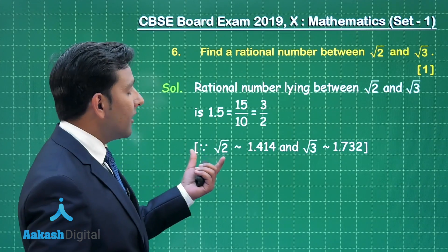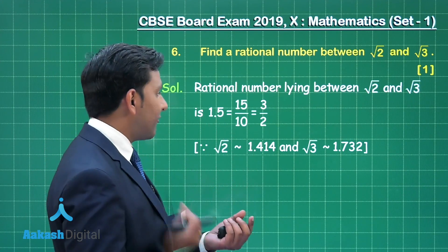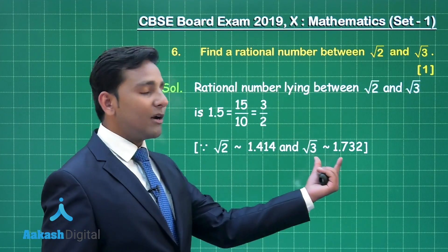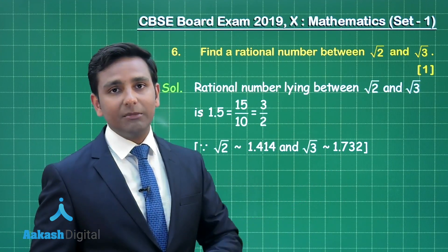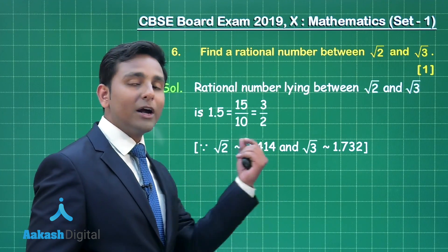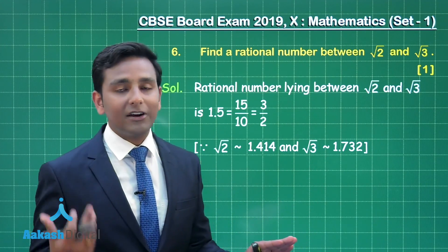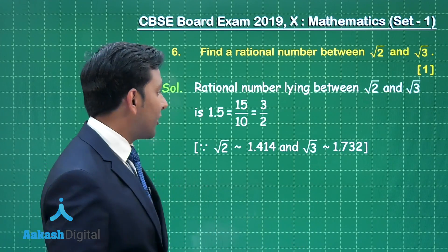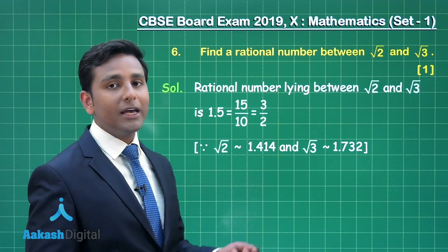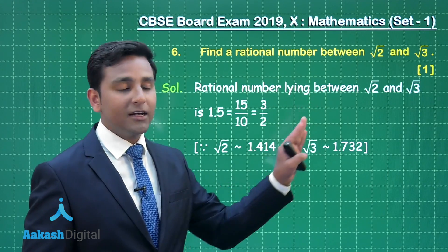You can take the value 1.6 or 1.7 — a rational number between 1.414 and 1.732 approximately. These are the approximate values of root 2 and root 3 respectively. So between these two numbers you can take any rational number. For example, here we have considered 1.5, that means 3 upon 2, which is one rational number between root 2 and root 3.